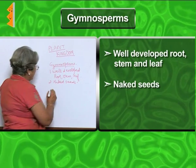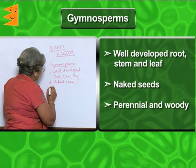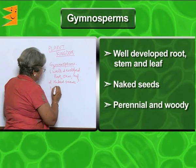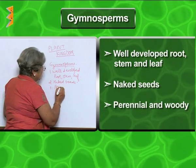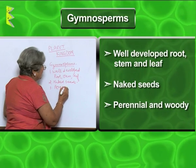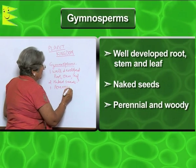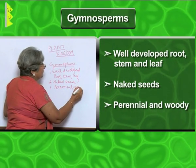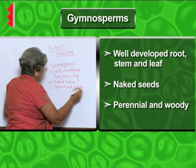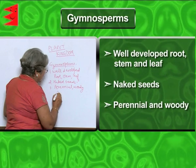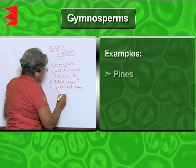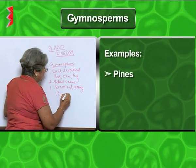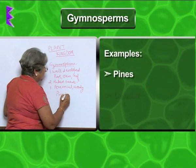These trees are very good in giving wood. They are perennial, which means evergreen and woody. Examples include pine and deodar.